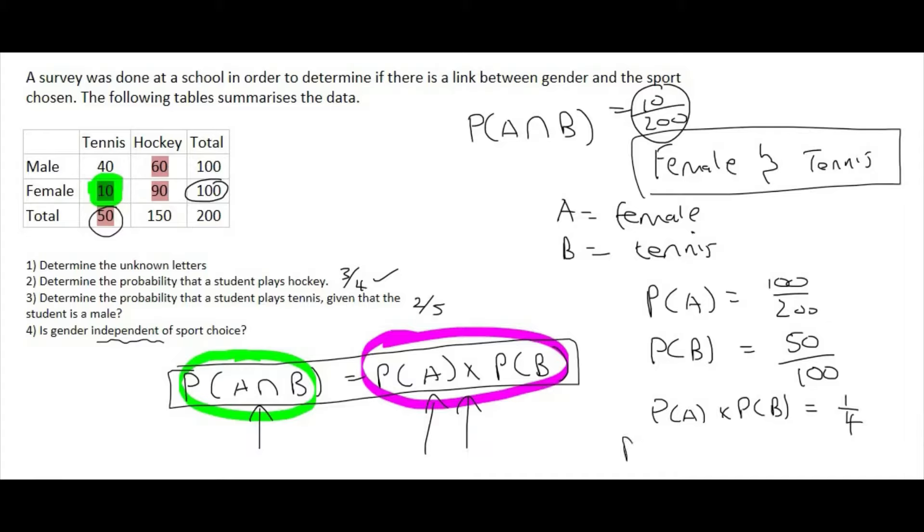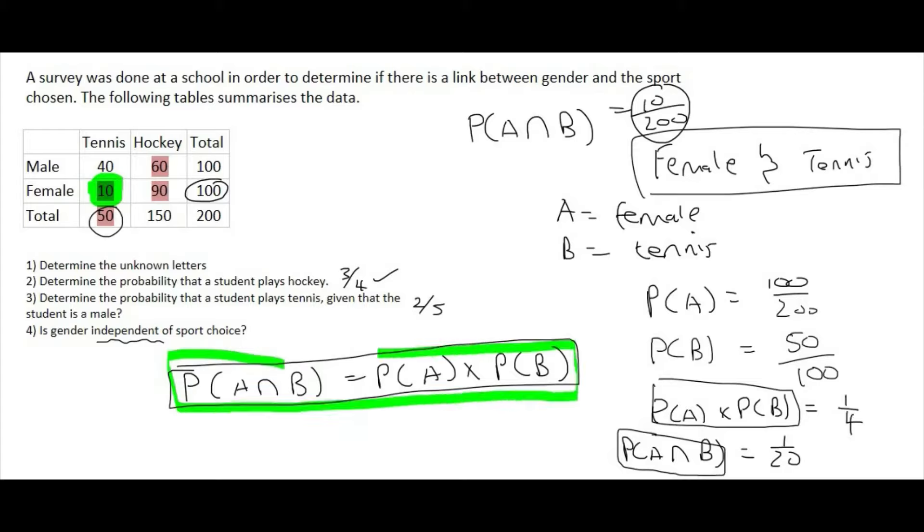And if we simplify the probability of A and B that we had at the top, which was the 10 out of 200, that's going to give us 1 out of 20. And so is the probability of A and B, so that's this one, is that the same as this one? Well, no, it isn't. And so therefore, this formula did not work. And so that is the formula of independence. And so because that formula did not work, we will say that gender is not independent of sport choice. So we'll say no. So what that means is that the gender, if we look at these numbers, does determine the type of sport that people would play.